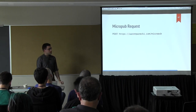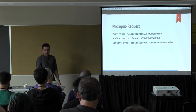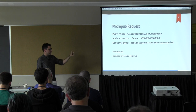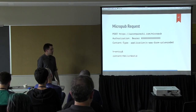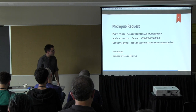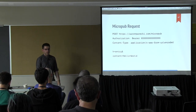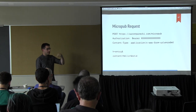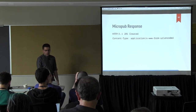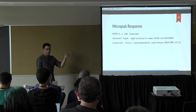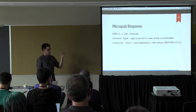Here's what a micropub request looks like — it's pretty simple. My micropub endpoint is this. The request comes in with an access token in a header and the payload looks like this: h equals entry, which is the object type, and the content of the post is in a parameter called content. This is the hello world of micropub — the smallest, most simple thing you can do. If you send this request to my endpoint with a valid access token, it will create a new note dated right now that says hello world, and it'll show up on my site.